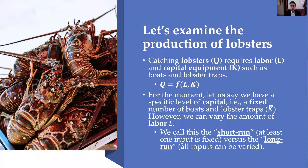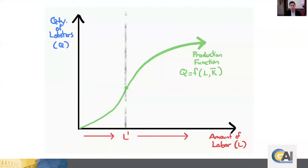For the moment, let's say capital is fixed — you only have a fixed number of boats and lobster traps. What we can vary to get more output is labor. As we increase labor, we would typically expect to get more output. This is what we call the short run: when you hold one input constant (typically capital) but vary labor. When we can vary both inputs, we call that the long run. On the x-axis we look at labor L, and on the y-axis we look at quantity output Q.